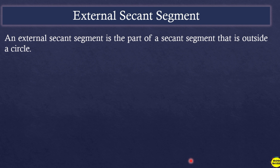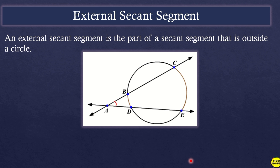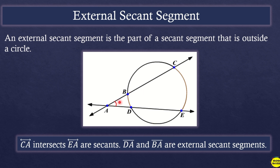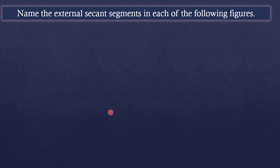An external secant segment is the part of a secant segment that is outside a circle. For example, in this figure, lines CA and EA are secants. The external secant segments are segment BA and segment DA — these are the parts located outside the circle.